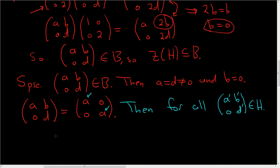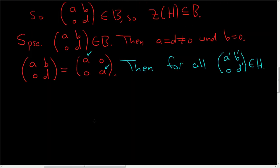So for all (a', b'; 0, d') in H, we're going to take the product. And if it commutes, then we are set. So let's do it. Let's see: (a, 0; 0, a) times (a', b'; 0, d').